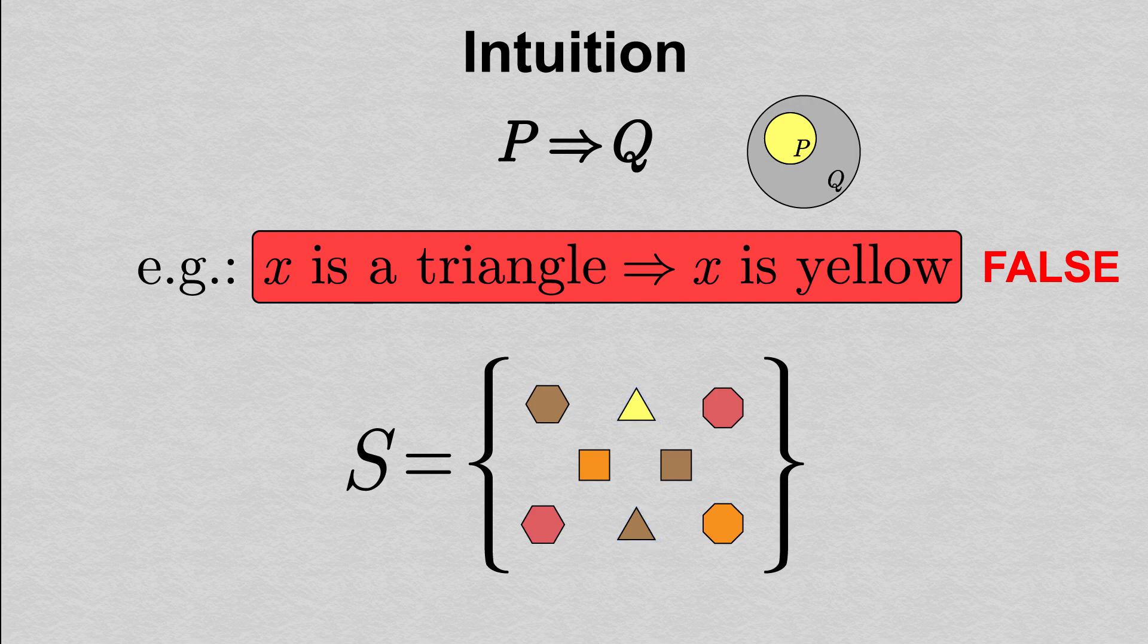We can explicitly refute this implication by pointing out what's called a counterexample, in which the hypothesis is true, but the conclusion is false. For example, this shape in S is a triangle, but is not yellow. This single counterexample explicitly demonstrates that the hypothesis is not sufficient to imply the conclusion, and thus that the implication is false.